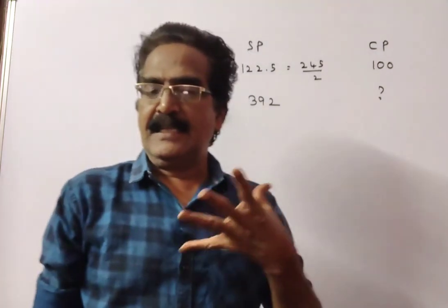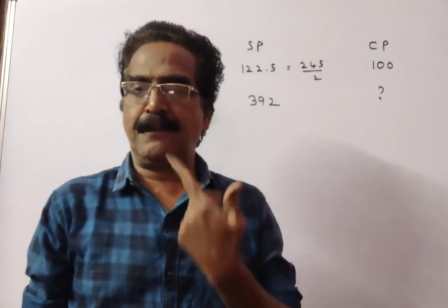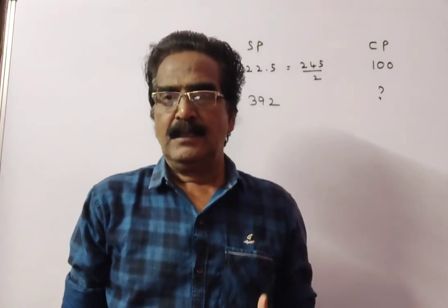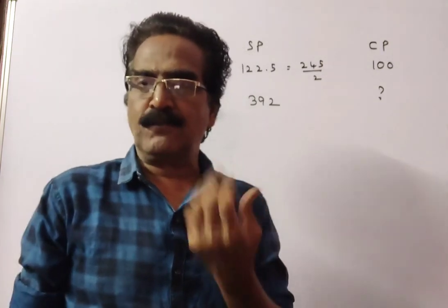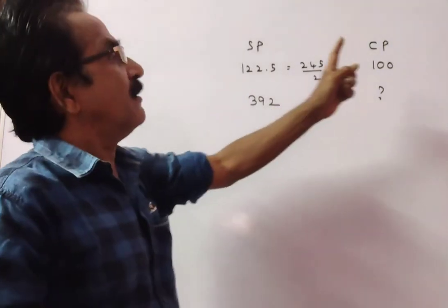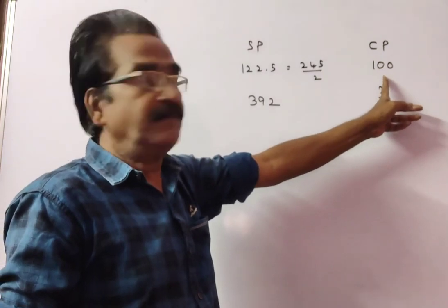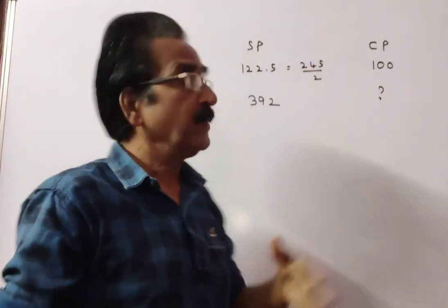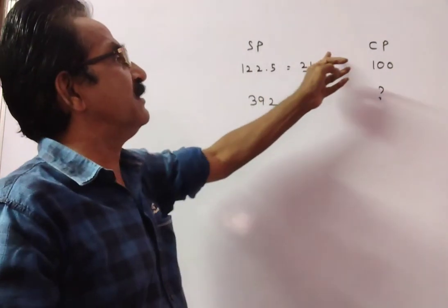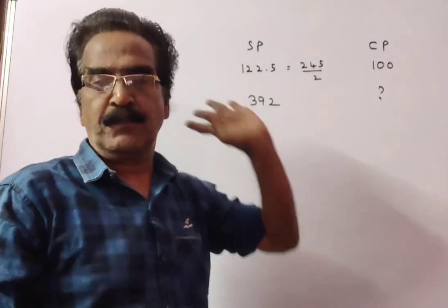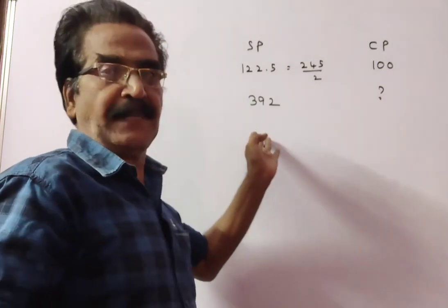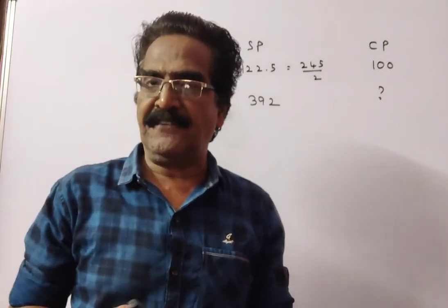See friends, a man expects a profit of 22.5%. This means if cost price is 100, selling price is 122.5, which is 245 by 2. If in a week he makes a sale of 392 rupees, what is his profit?